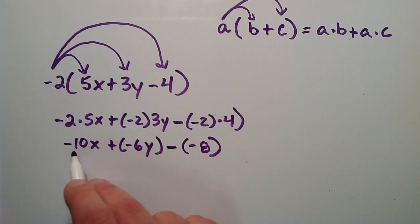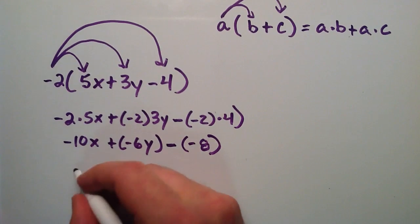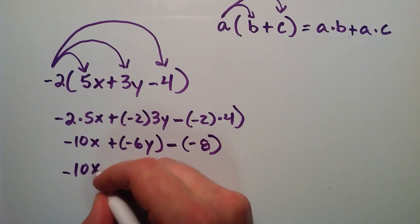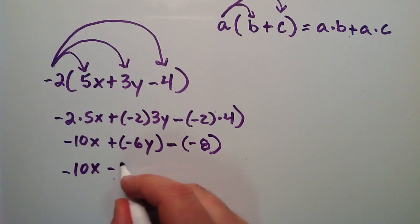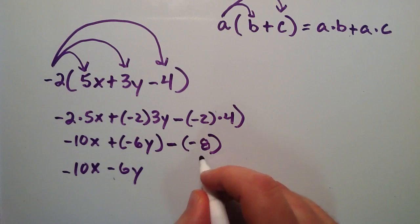And so now we have negative 10X plus a negative 6Y. If you're adding a negative, it's the same thing as subtracting. So this becomes negative 10X minus 6Y. And then if you're subtracting a negative, it's the same thing as adding a positive. So this becomes plus 8.